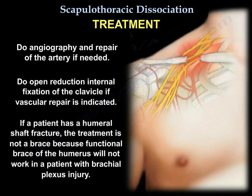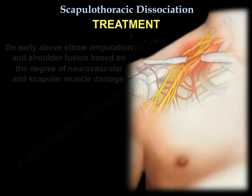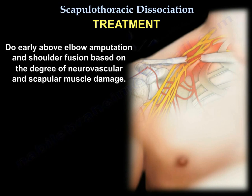If a patient with scapulothoracic dissociation has a humeral shaft fracture, the treatment is not a brace. A functional brace of the humerus will not work in a patient with a brachial plexus injury. Early above-elbow amputation and shoulder fusion should be considered based on the degree of neurovascular and scapular muscle damage.